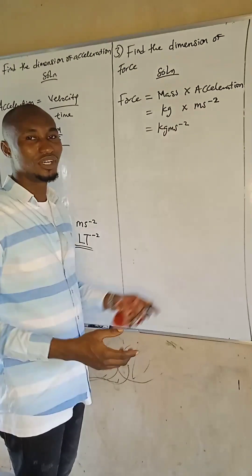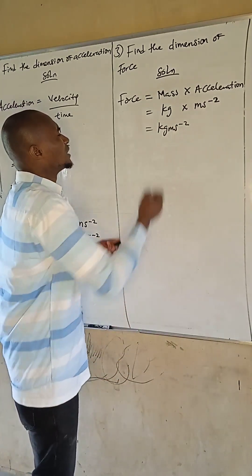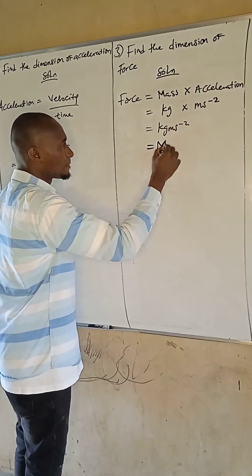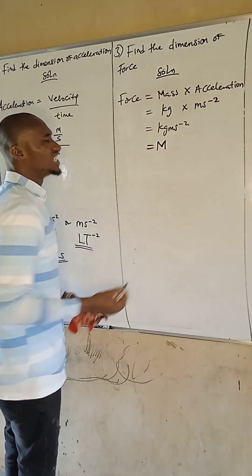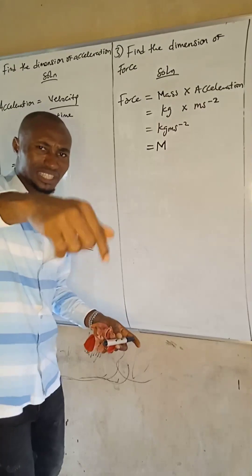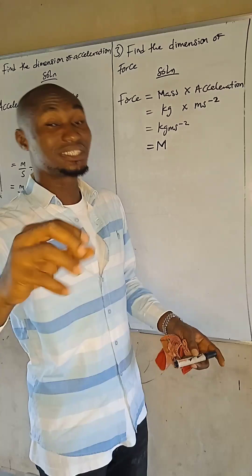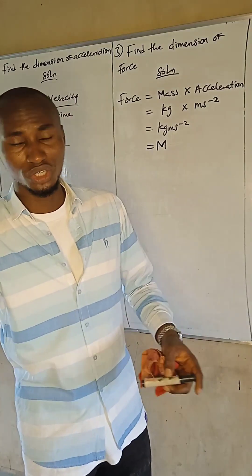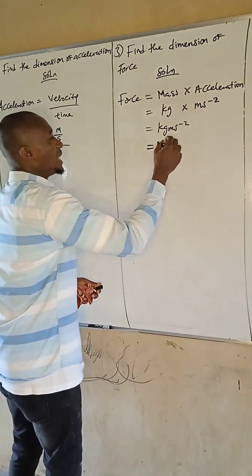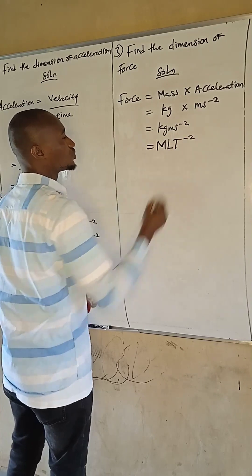Subscribe to get the updates. Let's continue. Now the dimension of force is: you write M, because the unit of force involves mass, and mass is a fundamental quantity. According to our definition, dimension is the way in which fundamental quantities are associated. So here we have mass, here we have length, here we have time.